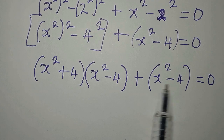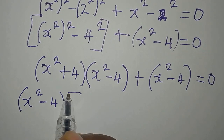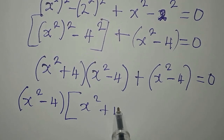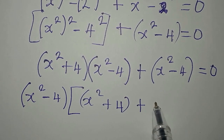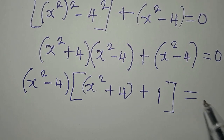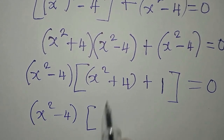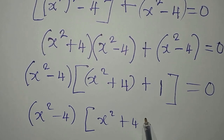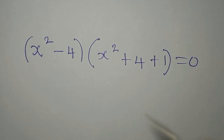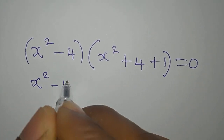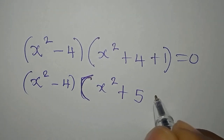By looking at this, you will discover that x squared minus 4 is common to both terms. So x squared minus 4 comes out as a common factor. Inside we have x squared plus 4 plus 1, giving us x squared minus 4 times x squared plus 5 equals 0.